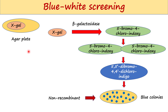For screening bacteria containing recombinant DNA, a substrate called X-gal is added to the agar plate. If beta-galactosidase is produced, X-gal gets hydrolyzed to form 5-bromo-4-chloro-indoxyl, which spontaneously dimerizes to form 5,5'-dibromo-4,4'-dichloro-indigo. The colonies formed by non-recombinant bacteria therefore appear blue in color.